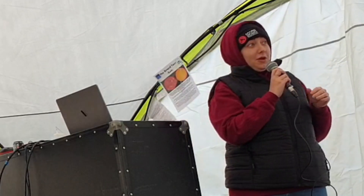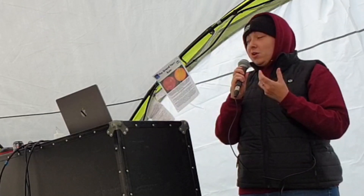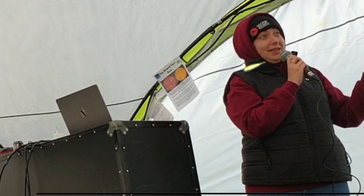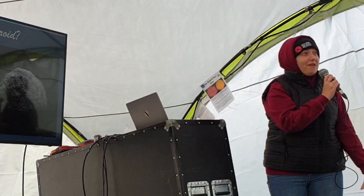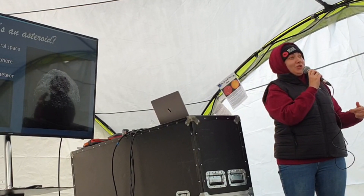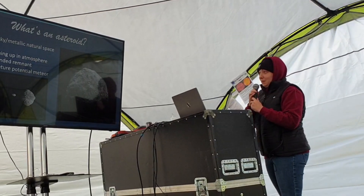Some terminology worth going through, because all of these words can get mixed up when you're thinking about small bits of rock up in space. An asteroid is your leftover debris from the formation of the solar system — rocky, metallic, natural space junk is one way to think about it. A meteor is when a little bit of that space junk is actively burning up in the atmosphere. So something can be an asteroid for maybe billions of years and it'll be a meteor for a few seconds. A meteorite is wherever it makes it to the ground on Earth and survives.